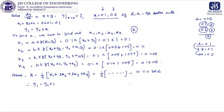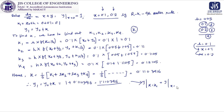Finally, Y1 = Y0 + K = 1 + 0.1103416 = 1.1103416. This is Y at X = X1 = 0.1. So we have obtained the first answer: Y at X = 0.1 is 1.1103416.